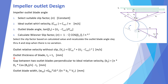The outlet blade thickness T2 can be set equal to T1. The gap between two outlet blades perpendicular to the ideal relative velocity is: B2 = (π × D2 × cos β2 / N) − T2. Once B2 is known, the outlet blade width WD2 = Qd2 × 10⁶ / (N × B2 × V2'). This gives the outlet blade width WD2.